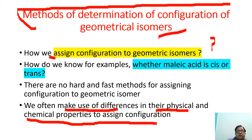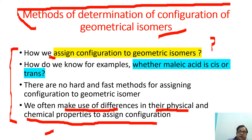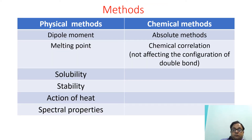To sum up: if I have some sample, how can I say that this sample is a cis isomer or a trans isomer? I have to use its physical as well as chemical properties to identify it as a cis or trans geometrical isomer. These methods are classified as physical methods and chemical methods.